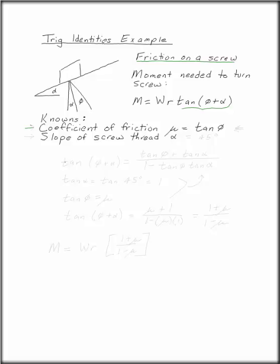So for a problem like this, you might be given the coefficient of friction and perhaps the slope of the screw thread. So we might know that mu and alpha.